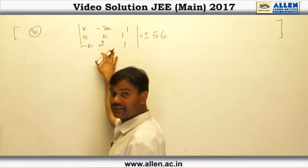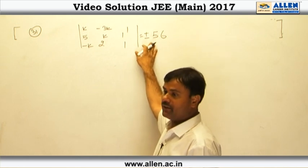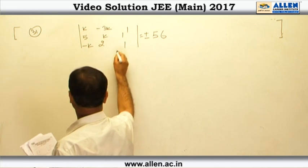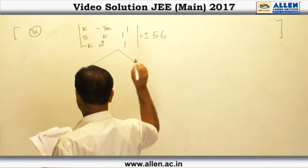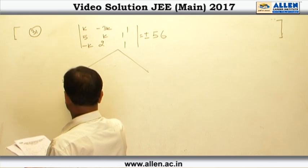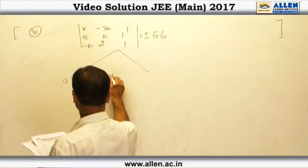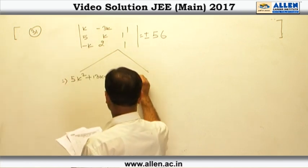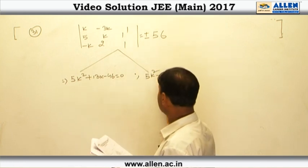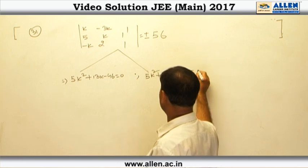There will be 2 cases. We consider the plus sign and also the minus sign. On expanding this determinant, we get 2 different quadratics in K. One will be 5K² + 13K − 46 = 0, and the other quadratic will be 5K² + 13K + 66 = 0.